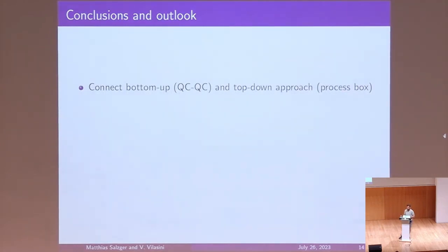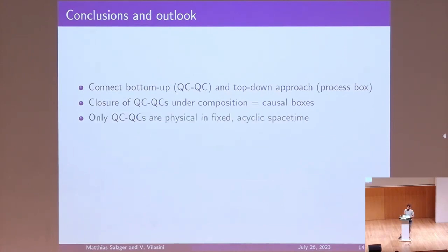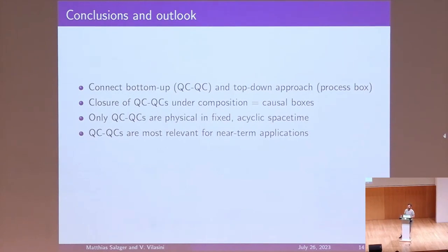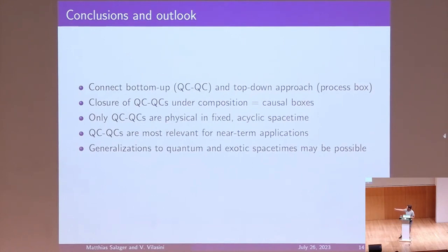To summarize: we connected a bottom-up approach — QCQCs — and a top-down approach — process boxes — within indefinite causal order. This tells us that the closure of QCQCs under composition is causal boxes, and that QCQCs are the only physical things in fixed acyclic spacetime. In terms of applications, QCQCs are the most relevant for near-term applications: if you want to apply indefinite causal order for some practical purpose, you should probably think about QCQCs, because anything else would likely require quantum gravity. QCQCs should be realizable in a standard lab in Minkowski spacetime. It might also be possible to generalize some results to quantum and exotic spacetimes.